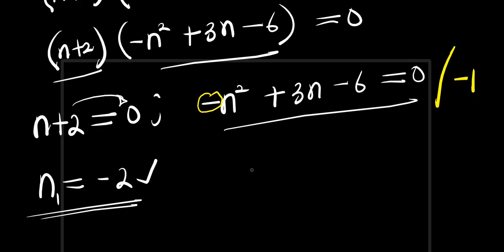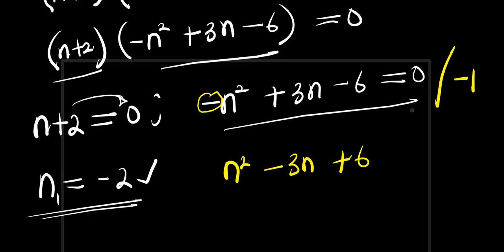So -n² ÷ (-1) = n², 3n ÷ (-1) = -3n, -6 ÷ (-1) = +6, giving n² - 3n + 6 = 0.